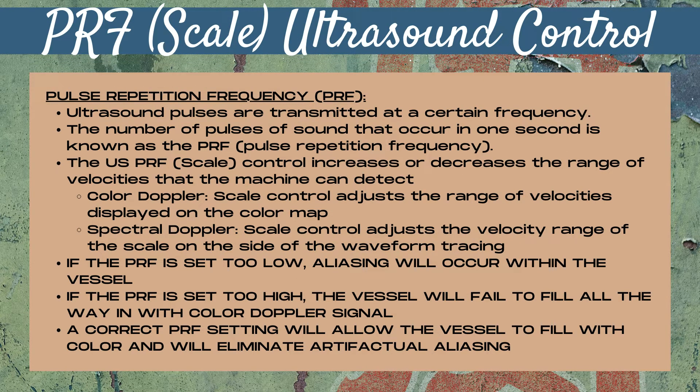The PRF is also known as the scale control on an ultrasound machine. Ultrasound pulses are transmitted at a certain frequency. The number of pulses of sound that occur in one second is known as the PRF, or pulse repetition frequency. The ultrasound PRF or scale control increases or decreases the range of velocities that the ultrasound machine can detect.